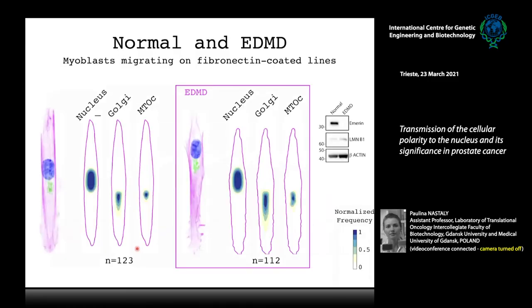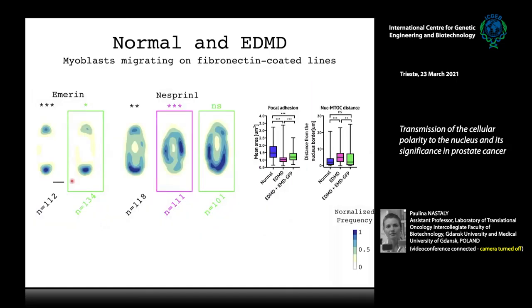I obtained normal and Emery-Dreifuss muscular dystrophy myoblasts from the Telethon Biobank, plated them on fibronectin-coated lines, and performed the same migration and front-rear polarization analysis. The same observations appeared: in disease cells the leading edge was elongated, the Golgi was elongated, and the microtubule organizing center was more distant from the nucleus than in control cells.